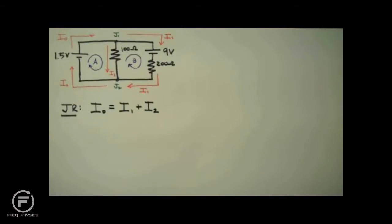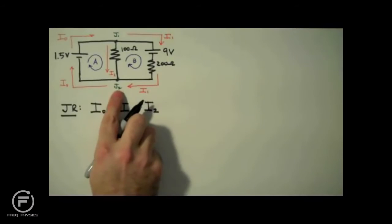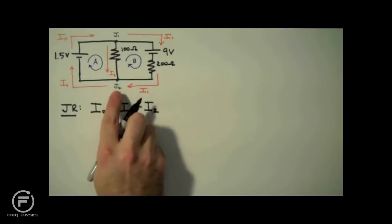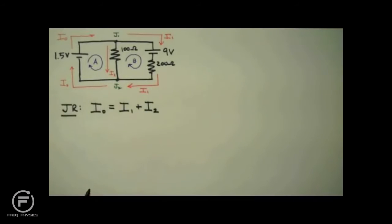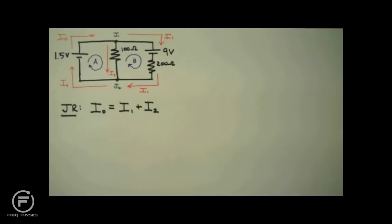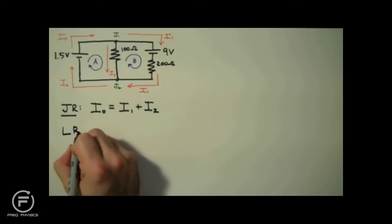Now if I apply the junction rule to junction 2, we'll have I1 coming in as well as I2 coming in, so on the left-hand side it would be I1 plus I2. And we have I0 coming out, so on the right side we have I0. This is exactly what we have already written, so we're not going to use that equation.